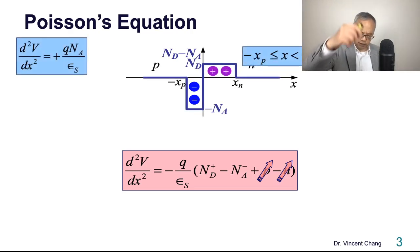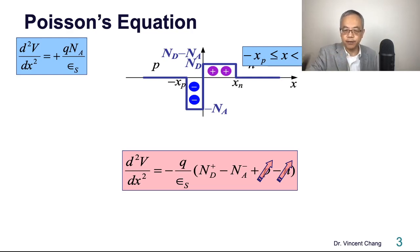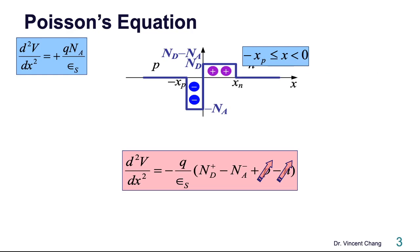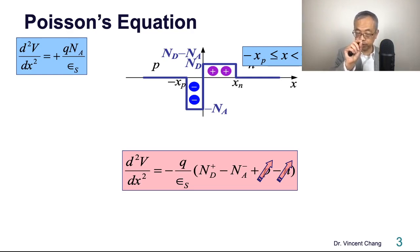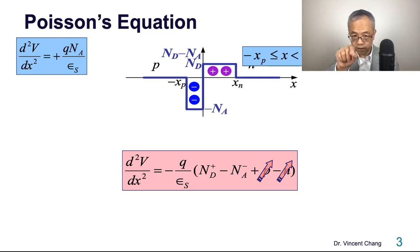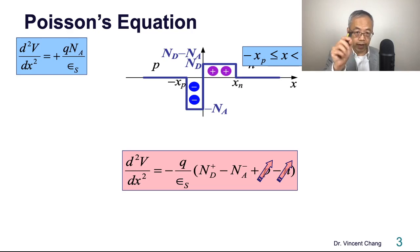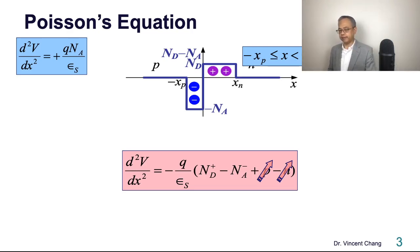Let's write the Poisson's equation specifically for the left-hand side, between negative xp and zero. Within the left-hand side of the depletion layer, there is only an acceptor ion — no donor ion. The negatives cancel out, so it becomes positive. So it's positive Q·Na⁻ / εs. Under complete ionization, Na⁻ equals Na, so it becomes Q·Na / εs.